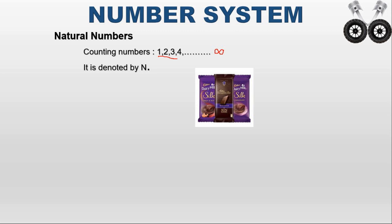There is an infinite set of natural numbers. For example, if you add two natural numbers like 1 plus 2, the answer is 3 — both the inputs and the result are natural numbers. If you subtract, like 2 minus 1, the answer is 1 — also a natural number. But sometimes, like 1 minus 1, the answer is 0, and since natural numbers start from 1, we cannot represent 0. So we move on to another set of numbers.